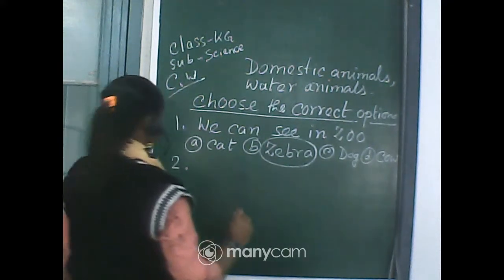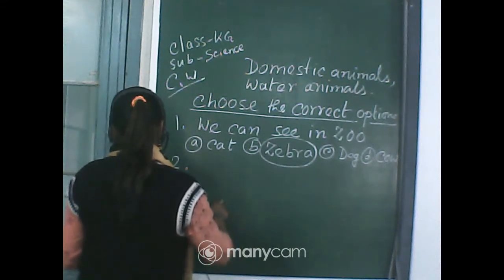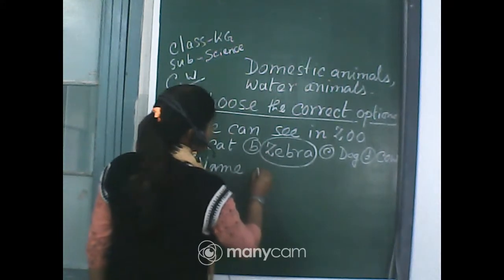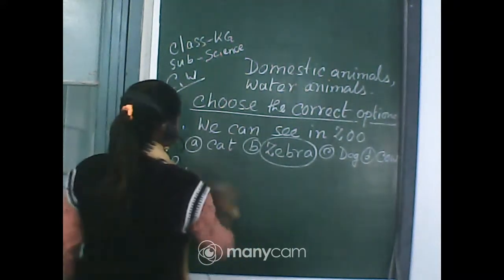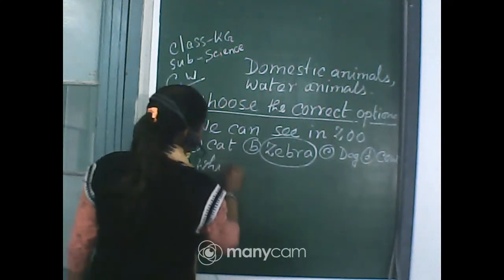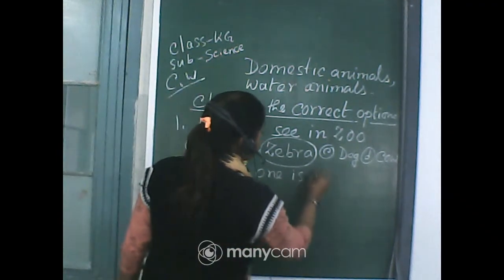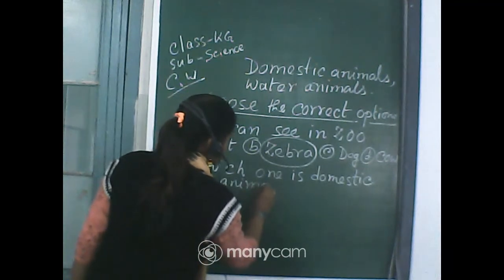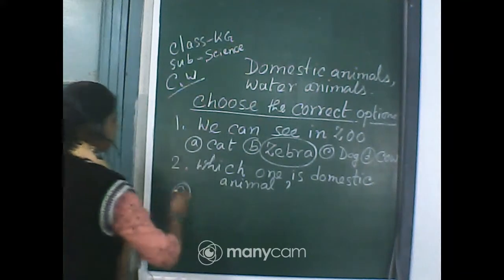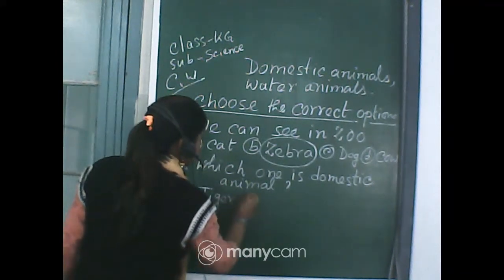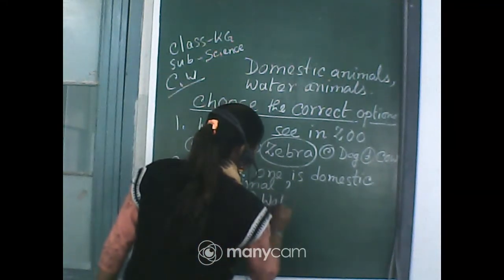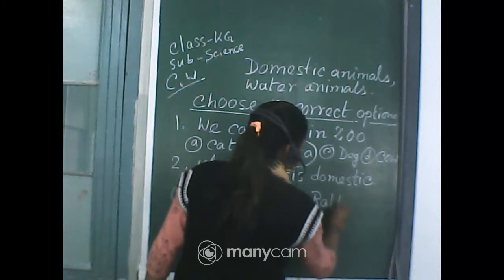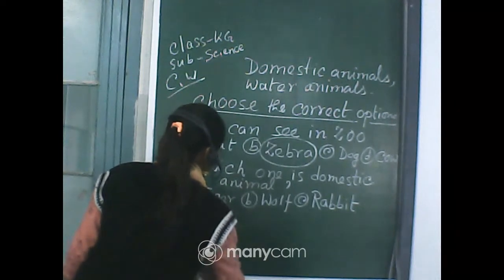Next, question number two: Which one is a domestic animal? Options are: A: Tiger. B: Wolf. C: Rabbit. D: Zebra.